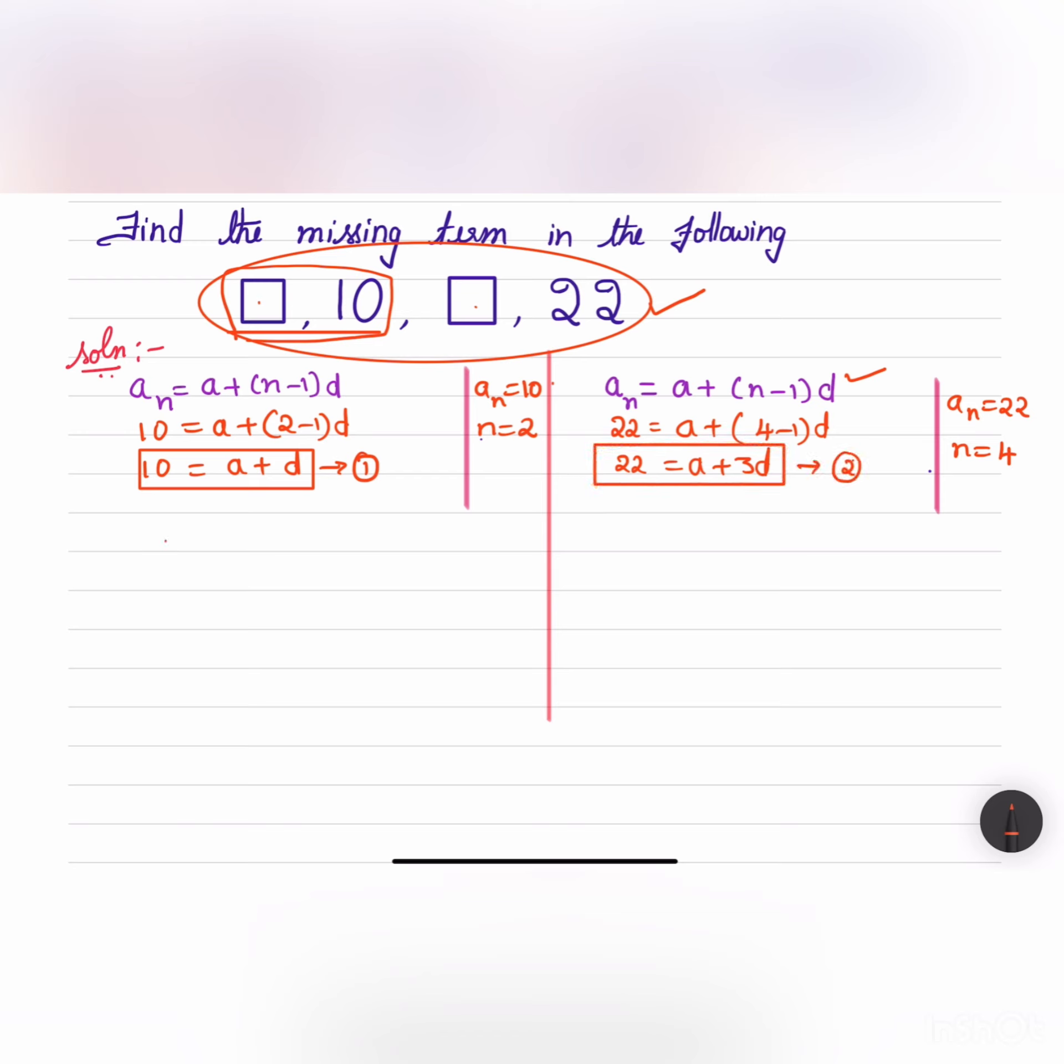Let us solve these two equations. 22 is equal to a plus 3d and 10 is equal to a plus d. Let us subtract these two equations and plus a and minus a will be cancelled. We will get minus 12 is equal to minus 2d. Hence, minus 12 by minus 2 will be equal to d and d is equal to 6.